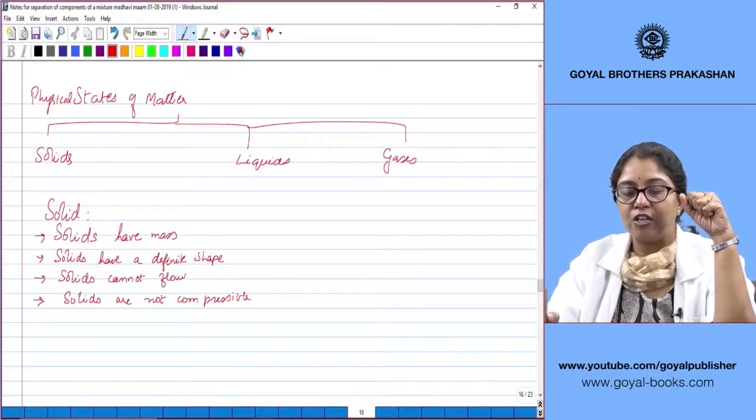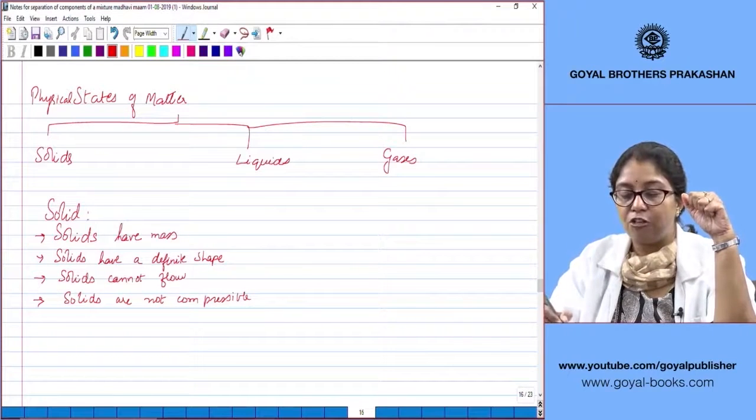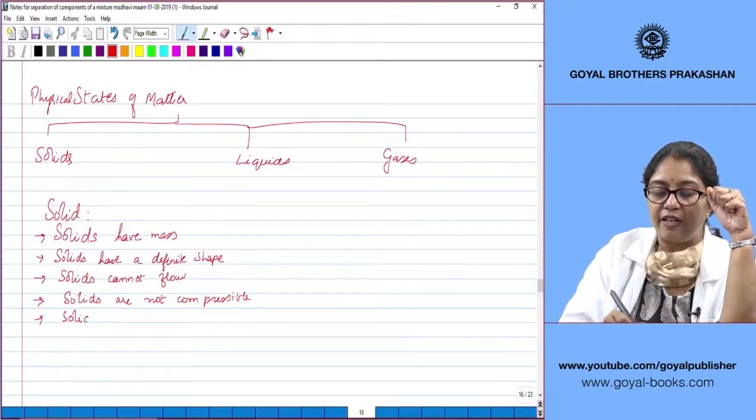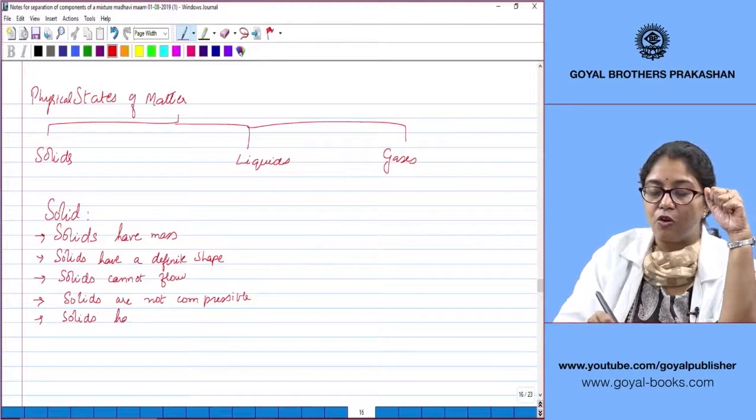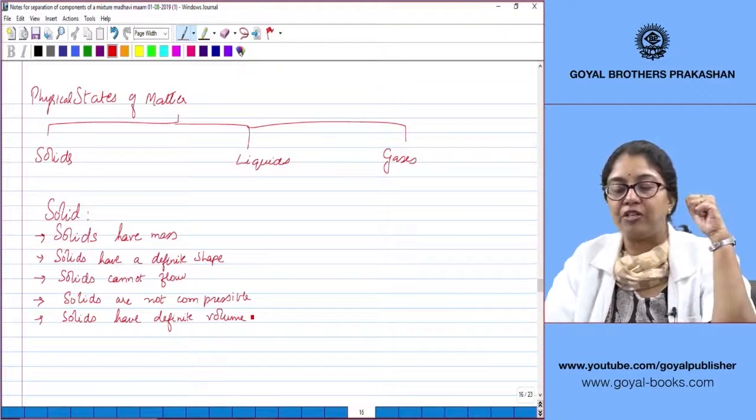So these are the different characteristics of a solid: solids have mass, they have a definite shape, solids cannot flow, solids are not compressible, and solids have a definite volume. These are the properties of a solid.